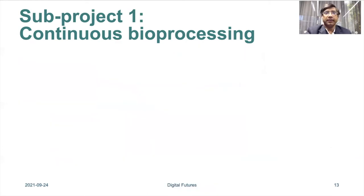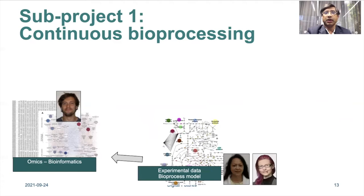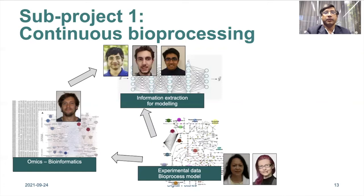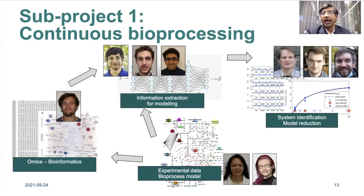In this sub-project, three groups work together. Veronique's group brings expertise in bioprocessing — they provide the data and the basic model. Our group develops model-based deep systems for further improvement of the model and information extraction. Håkan's group takes our output and develops system identification tools and model reduction.